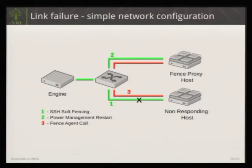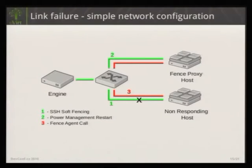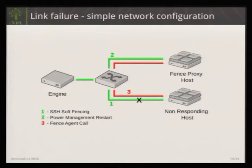In parallel, the engine executes other actions: it starts highly available VMs on other hosts and sets normal VMs' status to down. Also in parallel, we send another command to the fence proxy: the host is confirmed down, please start it again. The fence agent tries to start the host. If the start command is successful, we mark the host as non-responsive and wait for it to come back up. Any questions about this flow?